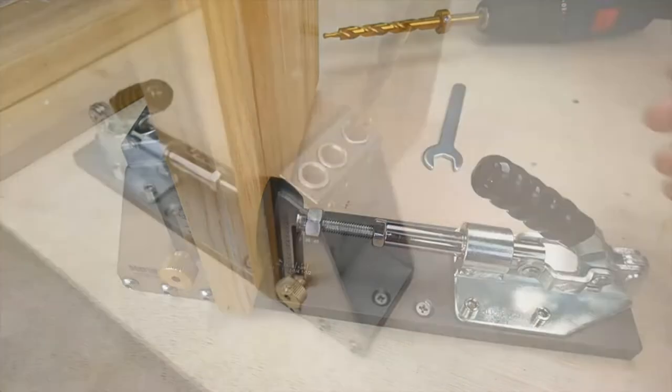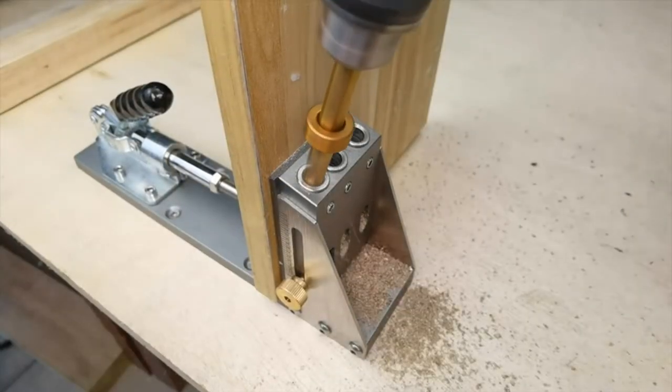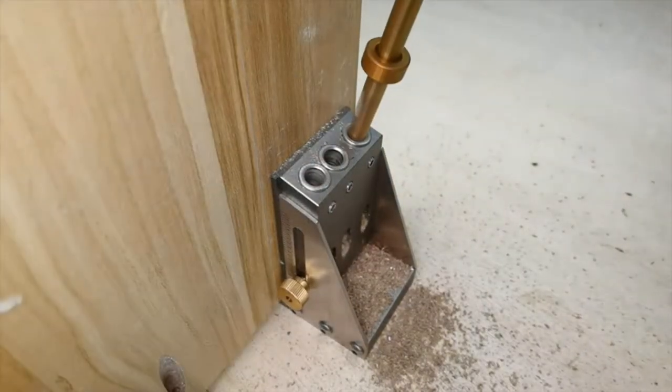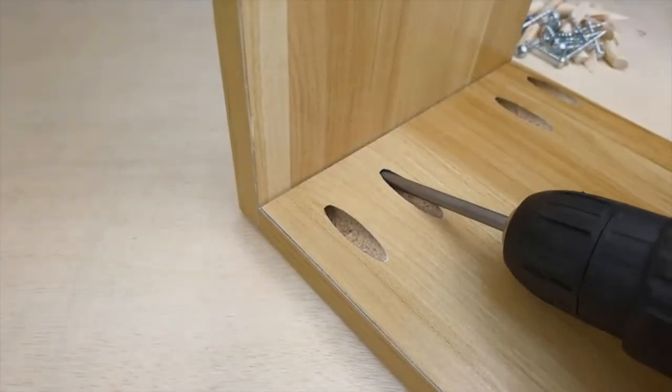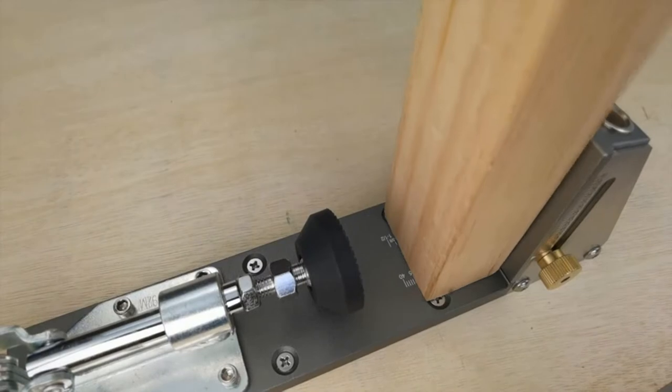Easy adjustment. Simply loosen the thumbscrews to release the marked slider. Set the slider to the thickness of material to be drilled, and then retighten the thumbscrews. Slider markings are in both imperial and metric measurements for all project needs.